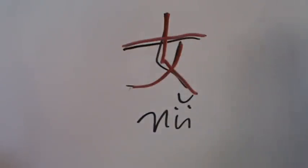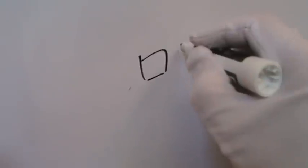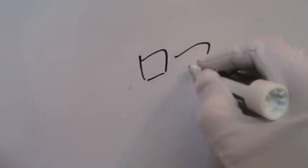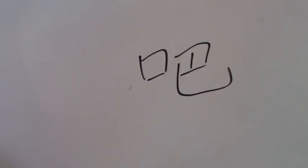Now let's go to supplementary characters. Supplementary character number one: 吧 (Ba), written with 7 strokes. Ba is a modal particle. It usually indicates uncertainty or doubt.